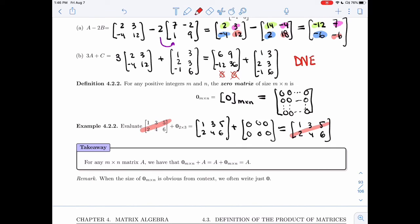All right, so let's write that in a takeaway. For any m by n matrix A, we have that 0_{m×n} plus A equals A plus 0_{m×n} equals A.